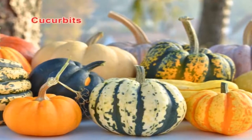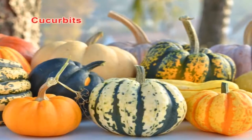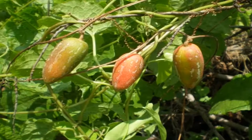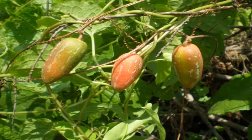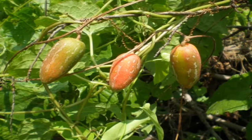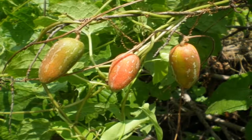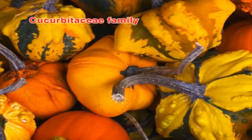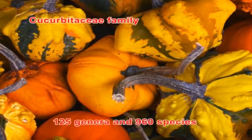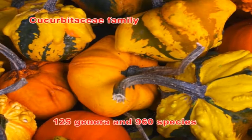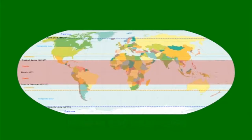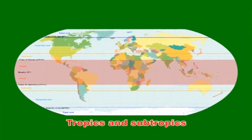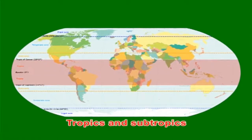Cucurbits are vegetable crops belonging to the family Cucurbitaceae, which primarily comprises species consumed as food worldwide. The Cucurbitaceae family consists of about 125 genera and 960 species, which are grown mainly in the regions of tropics and subtropics.